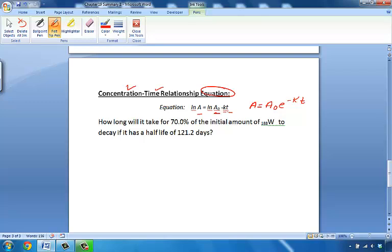A-naught is the amount of the substance at time zero. K is the constant, the decay constant.